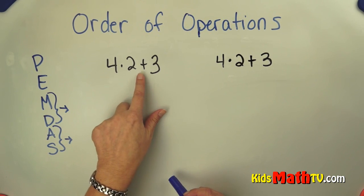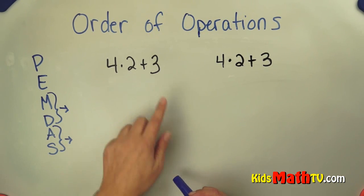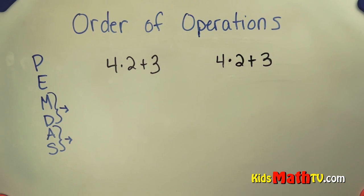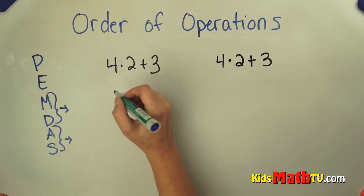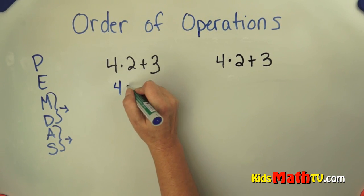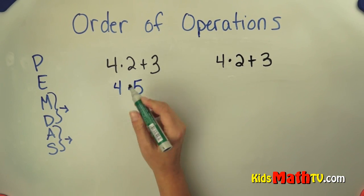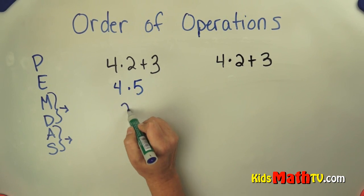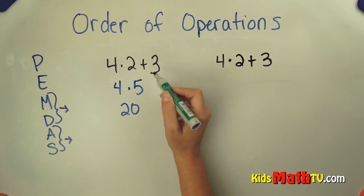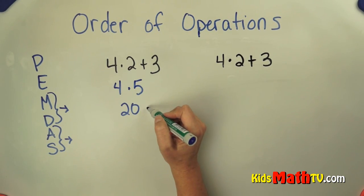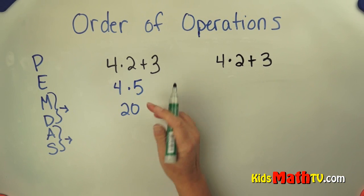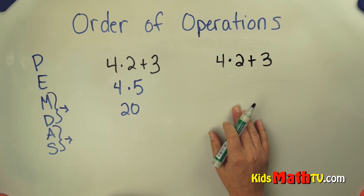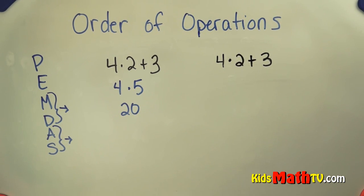So if we look at 4 times 2 plus 3, let's say that I just want to do 2 plus 3 first, which is 5, so I have 4 times 5, and 4 times 5 is 20. I did this in the wrong order of operations, and I'm going to show you that you'll get a different answer if you use the correct order of operations.